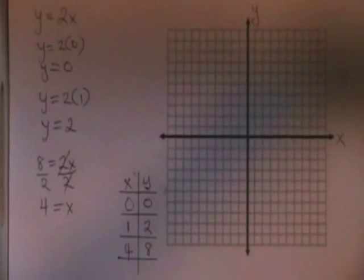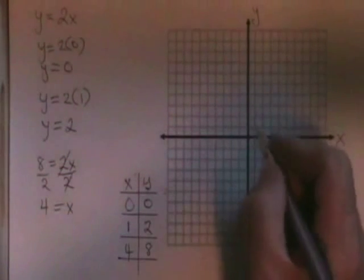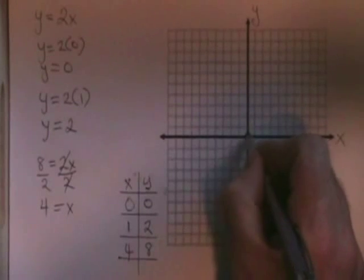Nonetheless, we need the three points in our table, including all intercepts, and on our graph in order to get full marks for graphing the question. So let's go ahead and graph these points.